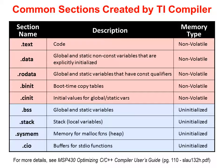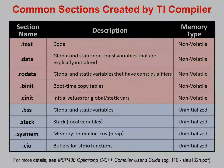Notice how the table is broken into two halves. The top half represents information that needs to be stored persistently, such as in non-volatile memory like flash or FRAM, while the bottom half needs to go into RAM-like read-write memory. Please refer to the compiler user's guide for a complete list of sections generated by the TI compiler, as well as more detailed descriptions of each section.